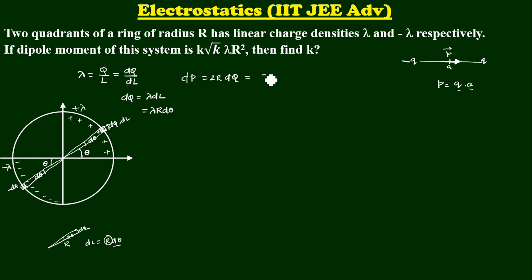So let me substitute that here. 2R lambda R D theta. So dP is going to be 2 lambda R square D theta. That is your dP.